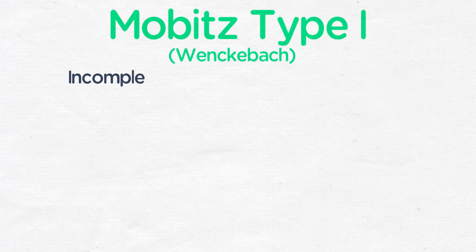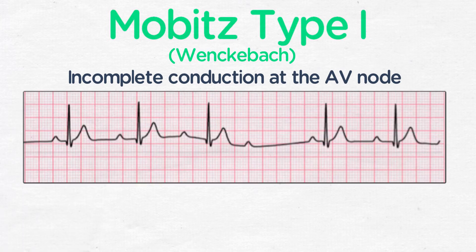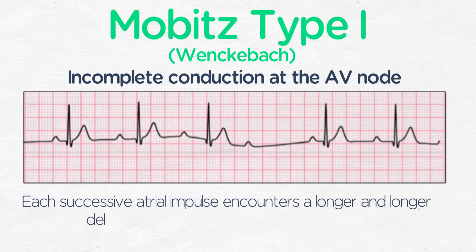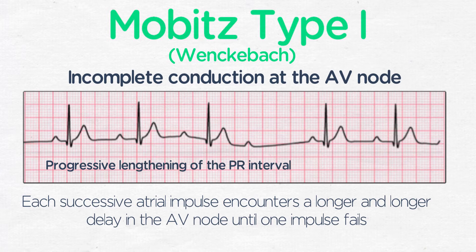The first variant is called Mobitz type 1, also called Wenckebach. The hallmark EKG finding is that each successive atrial impulse encounters a longer and longer delay in the AV node until one impulse, usually the third or fourth, fails to make it through. On EKG, you will see a progressive lengthening of the PR interval with each beat until a beat is dropped — that is, there is a P wave but no QRS after it. This cycle repeats, often with impressive regularity.